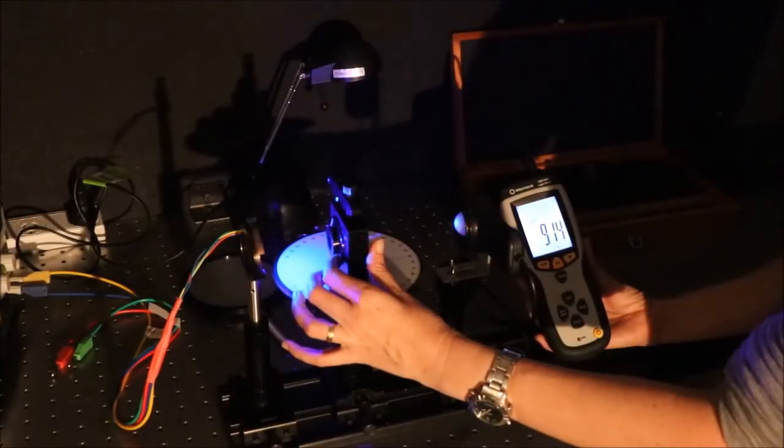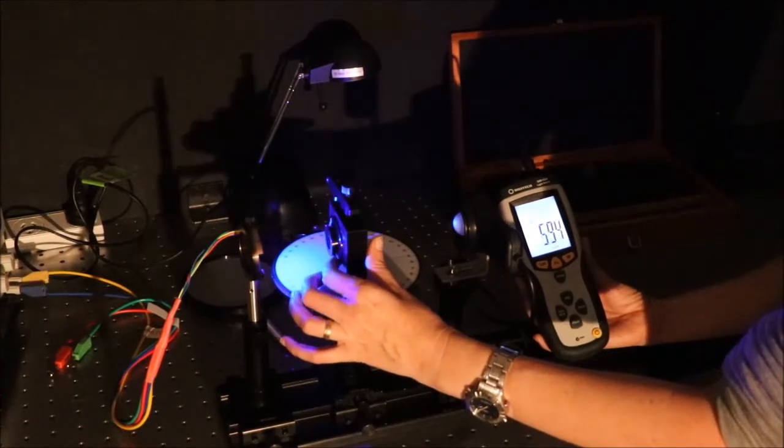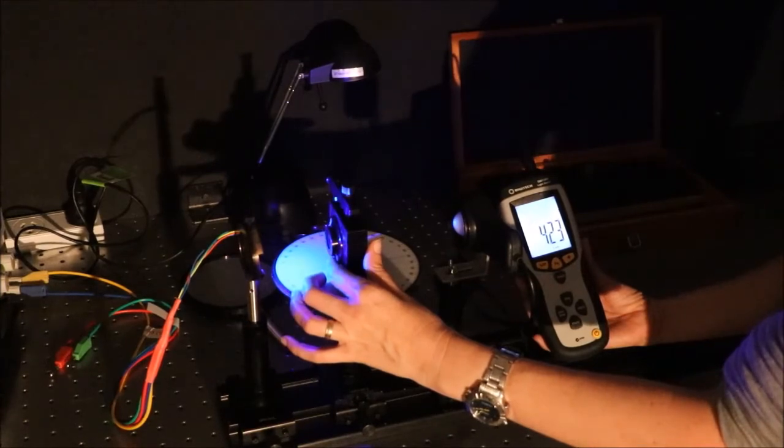Changing the diameter of the aperture changes the intensity of the light on the light meter. Make sure you record the diameter and the intensity.